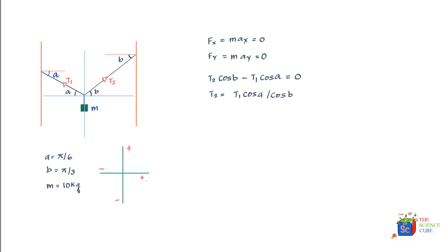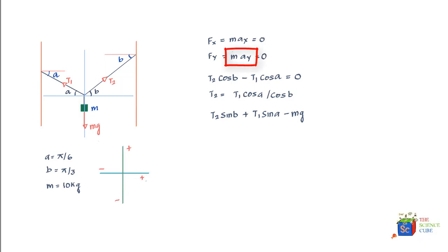Now summing all forces in the vertical direction: there is T2·sinB acting upward and T1·sinA acting upward, plus mg acting downward, which is taken as negative. Since the system is stationary, acceleration is zero, so this sum also equates to zero: T2·sinB + T1·sinA − mg = 0.